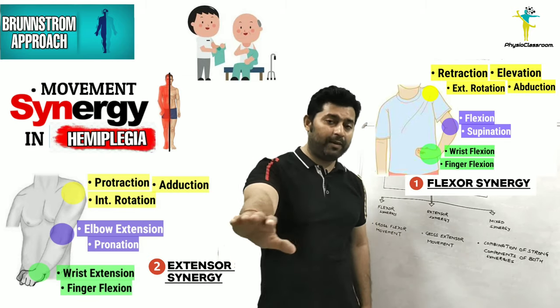It is important to note that hemiplegic patients cannot perform isolated movements when they are bound by these movement synergies. For example, if a hemiplegic patient wants to bend the elbow, they won't be able to do so without producing scapula retraction and elevation along with shoulder abduction. Every time the effort to initiate elbow flexion will be accompanied by activation of the rest of the muscles of that synergy.